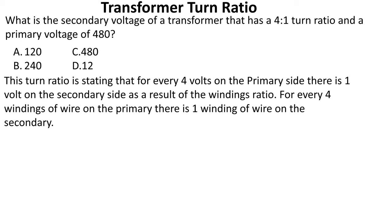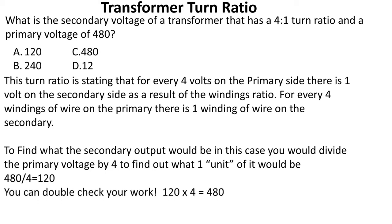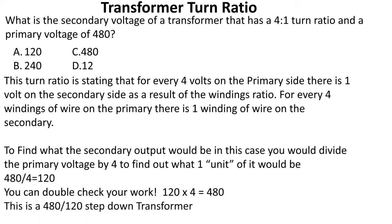This turn ratio states that for every four volts on the primary side, there is one volt on the secondary side as a result of the windings ratio — for every four windings of wire on the primary, there's one winding on the secondary. To find the secondary output, divide the primary voltage by four to figure out what one unit would be: 480 ÷ 4 = 120. Double-check by multiplying 120 by four to get back to 480. This is a 480-to-120 step-down transformer. We select A.